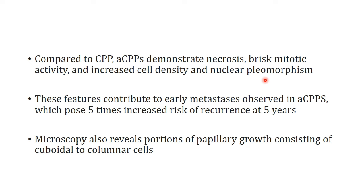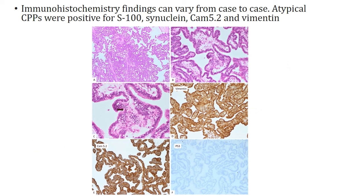These features contribute to the early metastases observed in atypical choroid plexus papillomas. Microscopy reveals papillary growth consisting of cuboidal to columnar cells, with arborizing papillae lined by cells with a high N:C ratio and high mitotic activity of 2 to 5 mitotic figures per 10 high power field. They show positivity for vimentin, CAM 5.2, and a null pattern of p53 staining — that is, all-or-none pattern indicating p53-associated mutations.